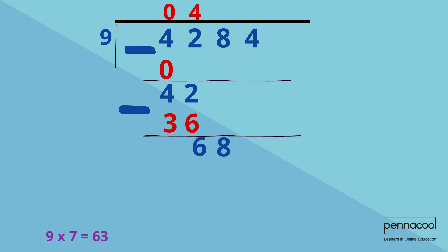We know that we can get 7 nines in 68 with remainders. 9 multiplied by 7 equals 63. The 7 goes in our answer space at the top of our question. Next, 63 goes under 68 to do our subtraction where there is a remainder of 5.